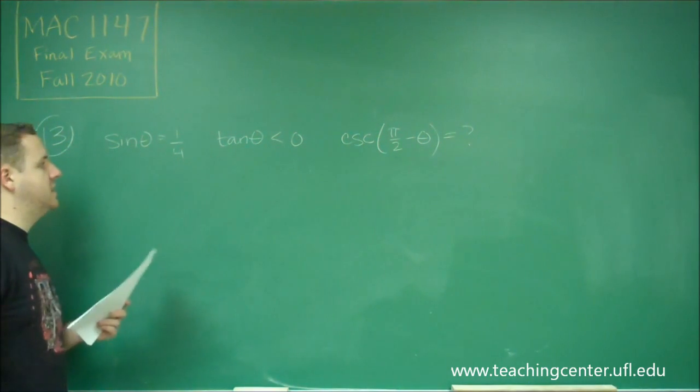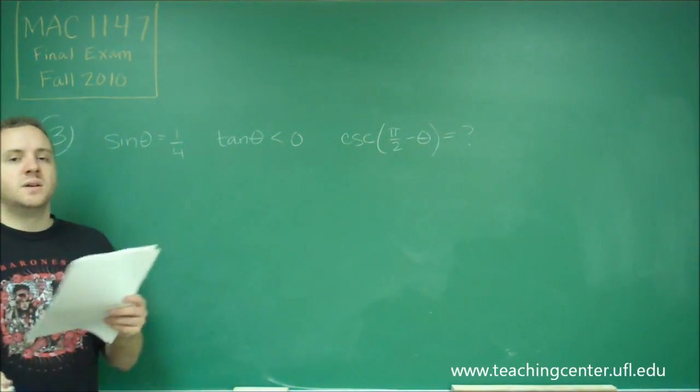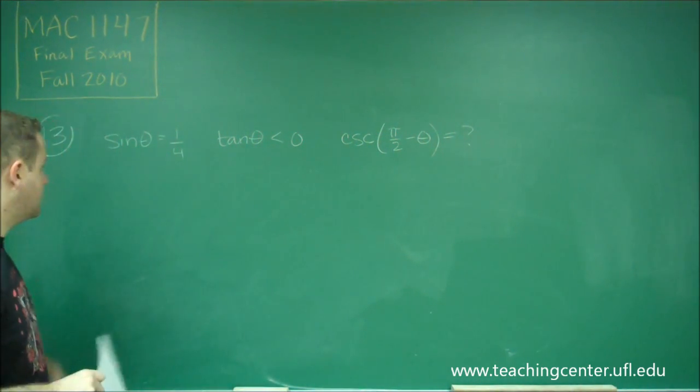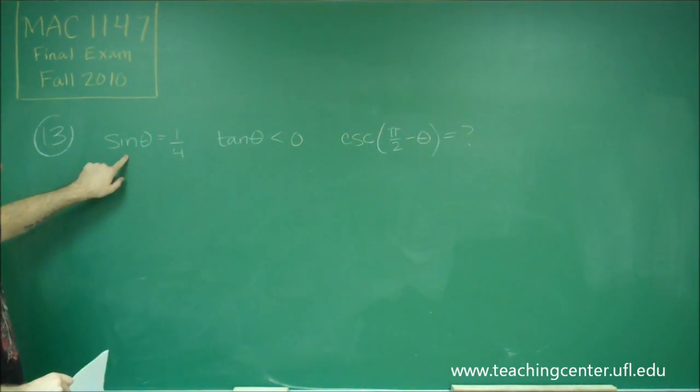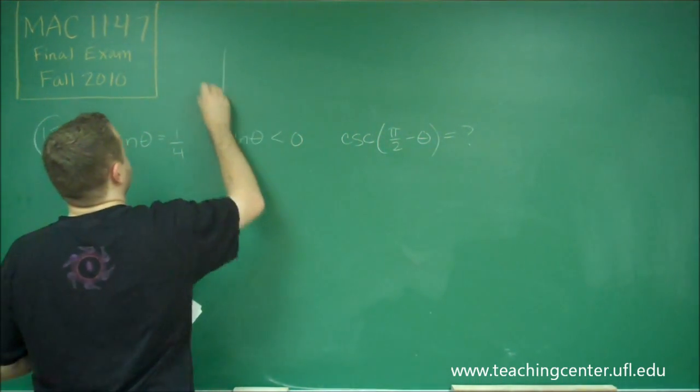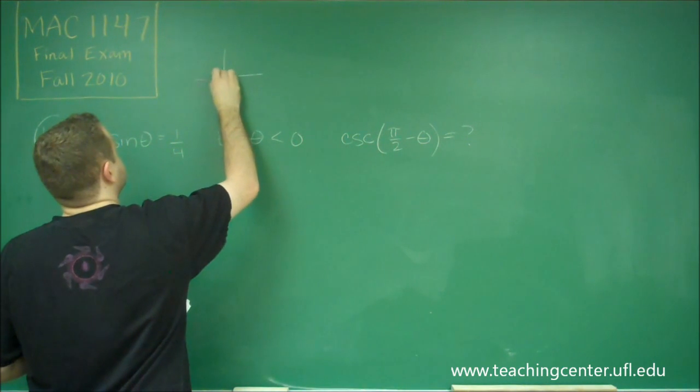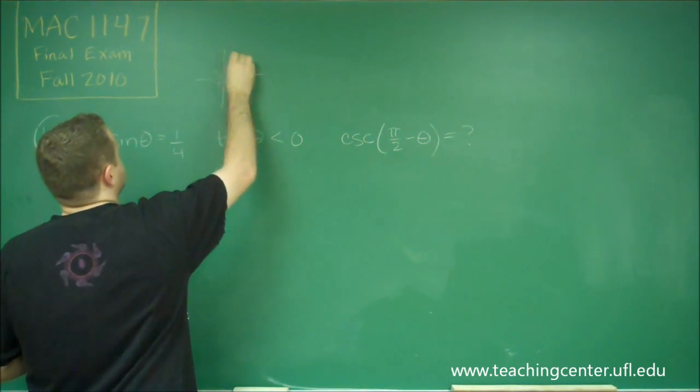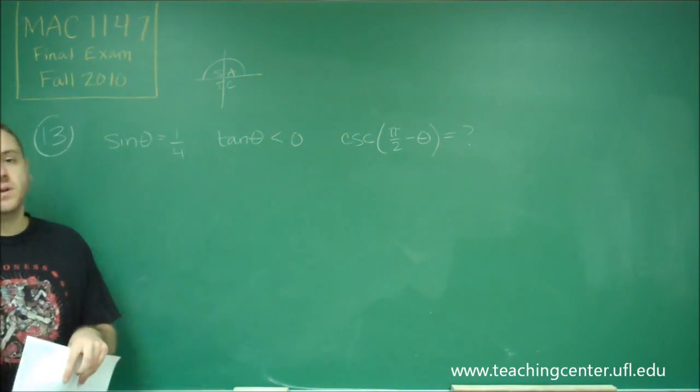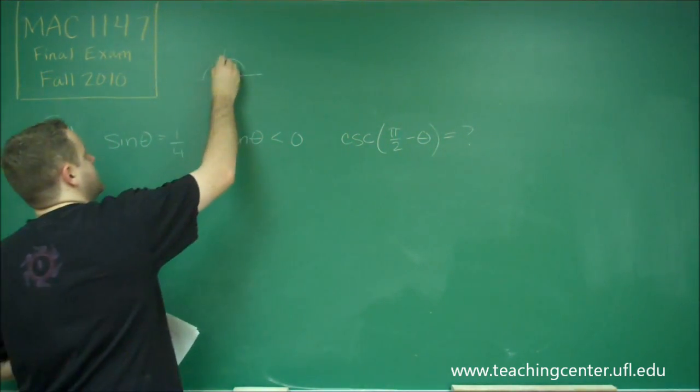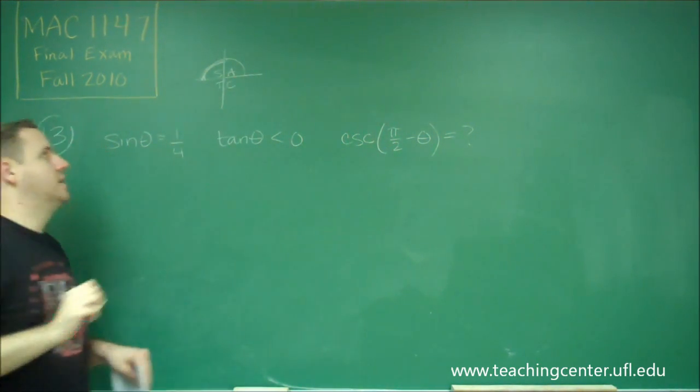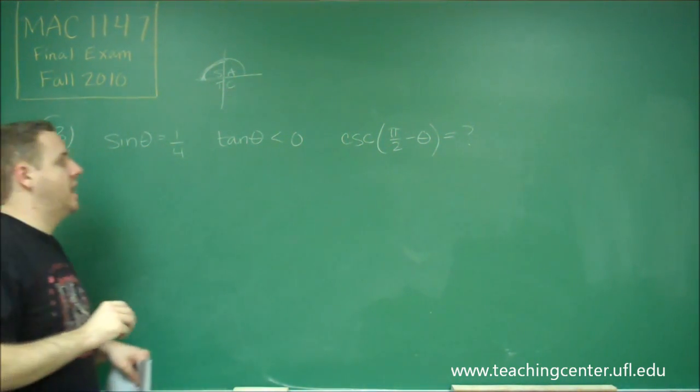Alright, so the first thing we should determine is what quadrant is our angle in. Well, sine theta is positive, so that would tell you it has to be quadrants 1 and 2. Remember, you're A, S, T, C. So we're only talking about the first two quadrants if sine is positive. We also know that tangent is negative, so that isolates only quadrant 2 as our possible answer. So we know that our answer has to be in quadrant 2.